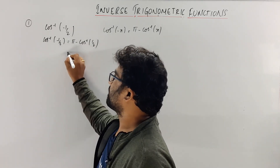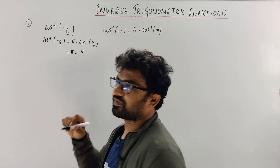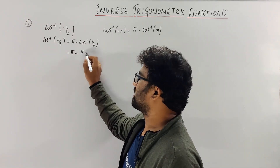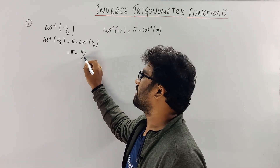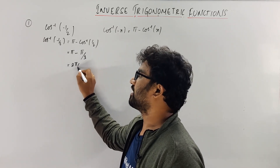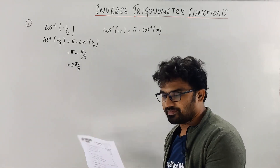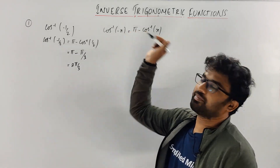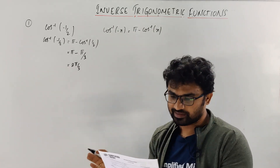So what is the value now? π minus cos⁻¹(1/2). Cos(1/2) — cos 60 degrees — that is π/3. So the answer is π − π/3 = 2π/3. That's a very simple question. But you should know when to take π minus and when not to. If you know that, it's very simple.